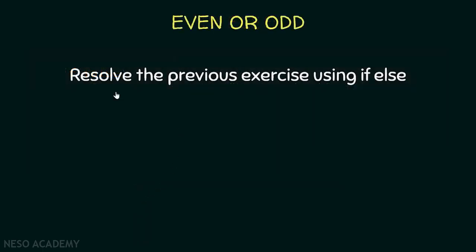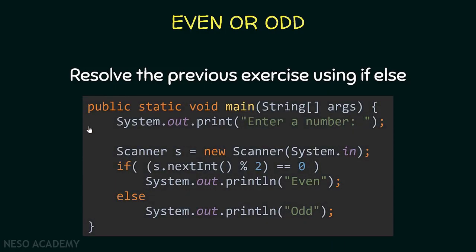I want you to pause the video and resolve the previous exercise using if-else, and after that come back and see my solution. First, I'm printing 'enter a number', then creating a scanner object and reading an integer from the user. I immediately use the modulo operator to get the remainder of dividing that number by two, and then test if the result is equal to zero.